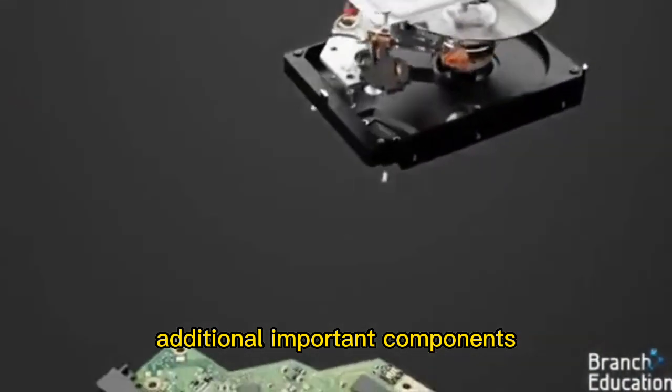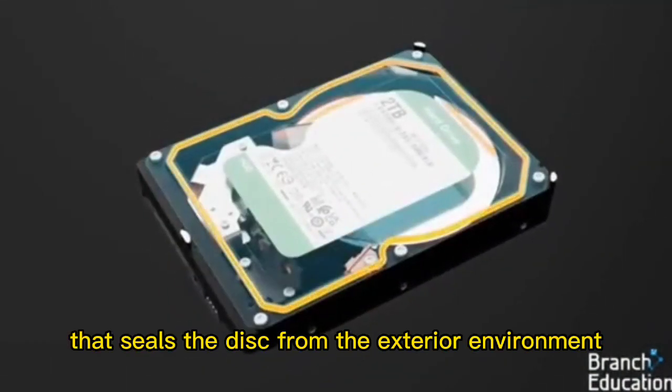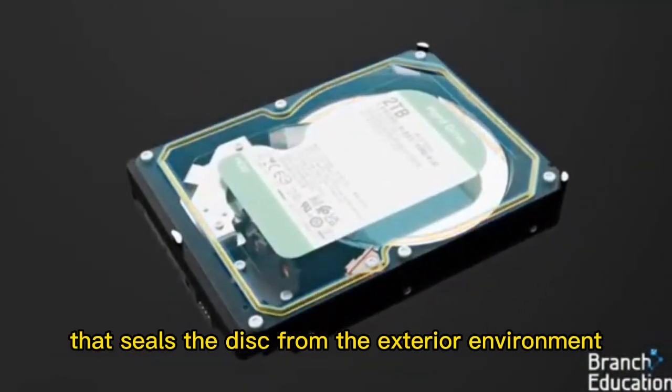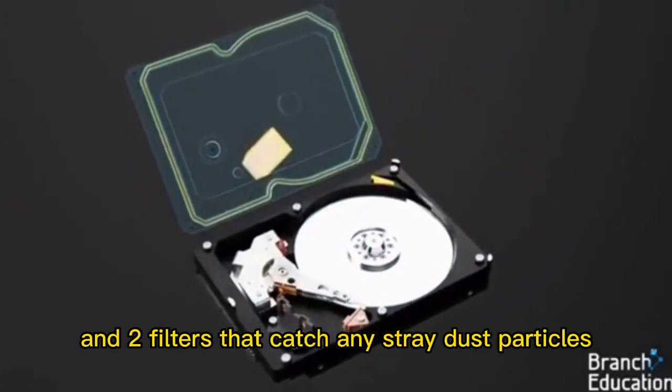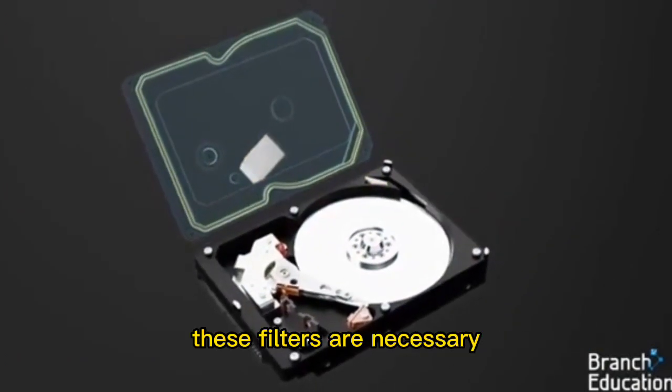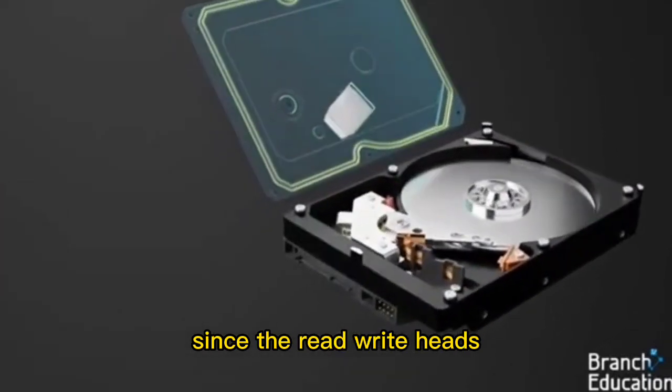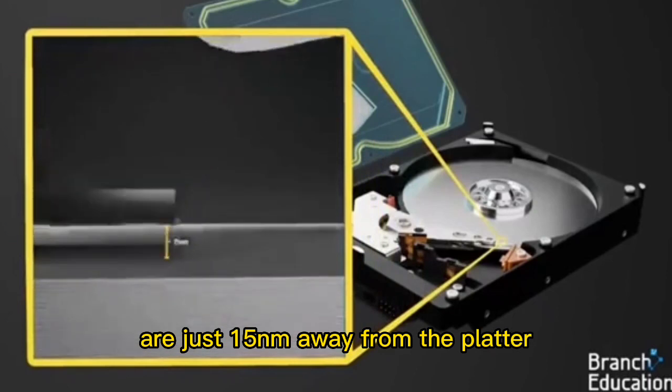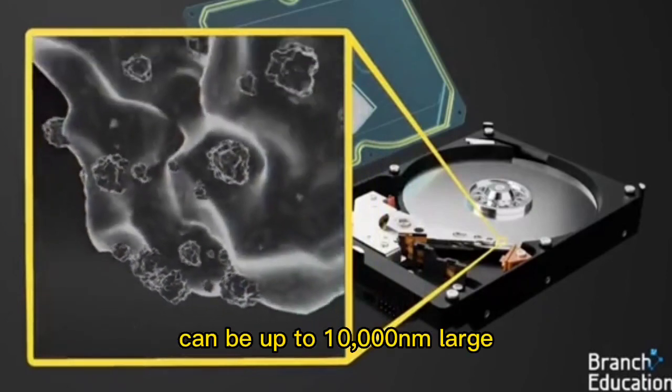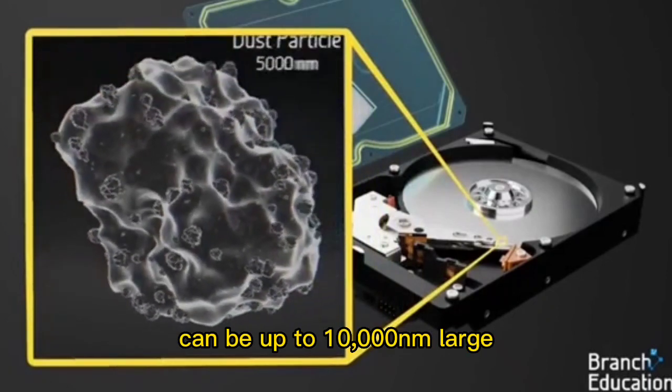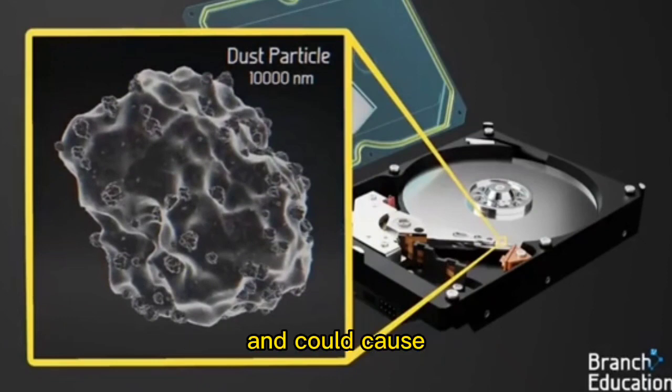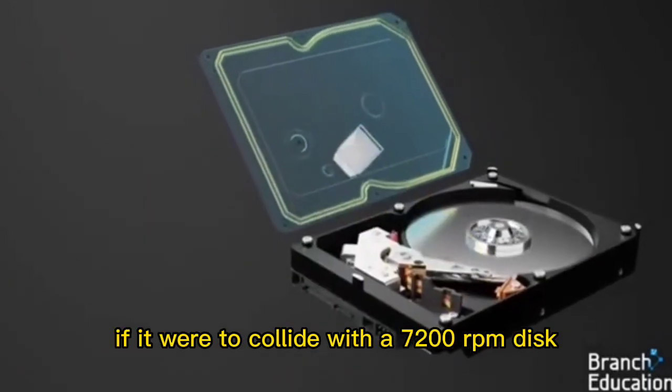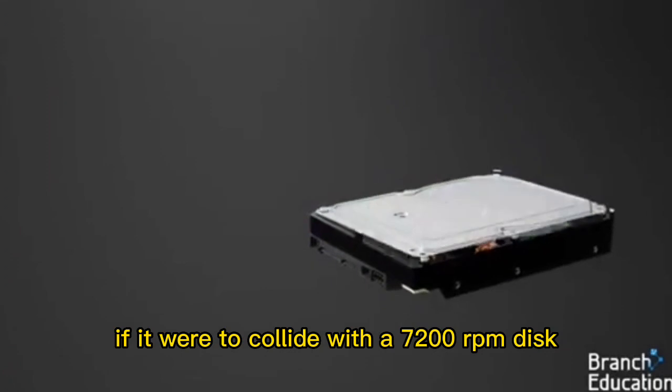Additional important components are the gasket that seals the disk from the exterior environment and two filters that catch any stray dust particles. These filters are necessary since the read write heads are just 15 nanometers away from the platter and a single dust particle can be up to 10,000 nanometers large and could cause major damage if it were to collide with the 7,200 RPM disk.